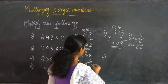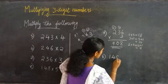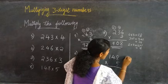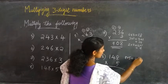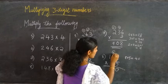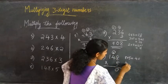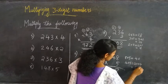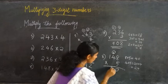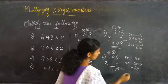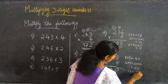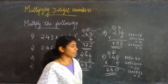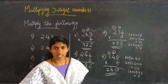Then the last question: 148 into 5. First 8 into 5 is 40. Writing 0 here and 4 is carried over. Then 4 into 5 equal to 20, plus 4 that is equal to 24. Writing 4 here and 2 is carried over. Then 1 into 5 equal to 5, plus 2 is equal to 7. So 148 into 5 equals 740.